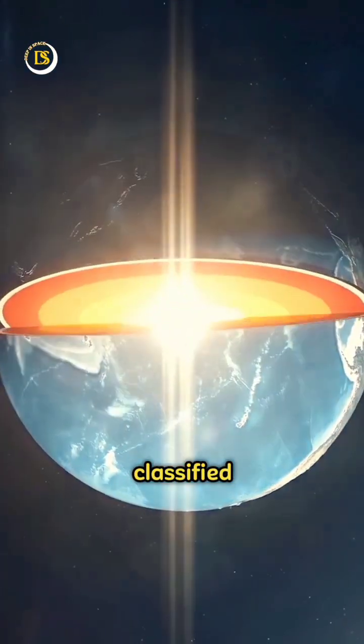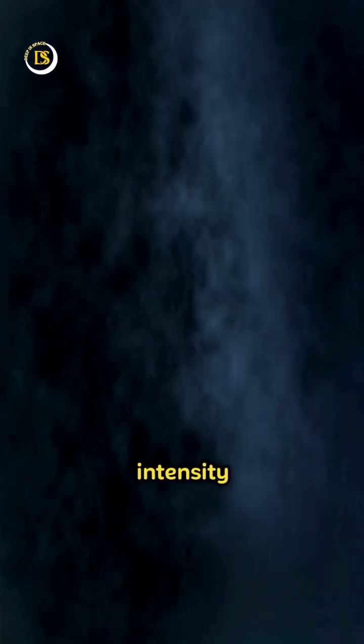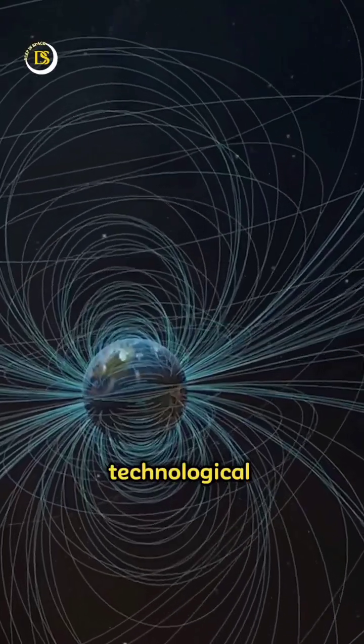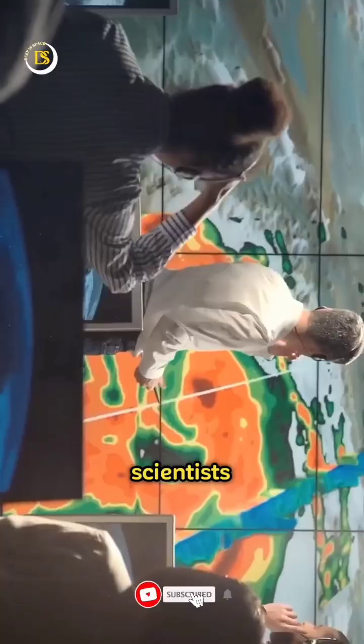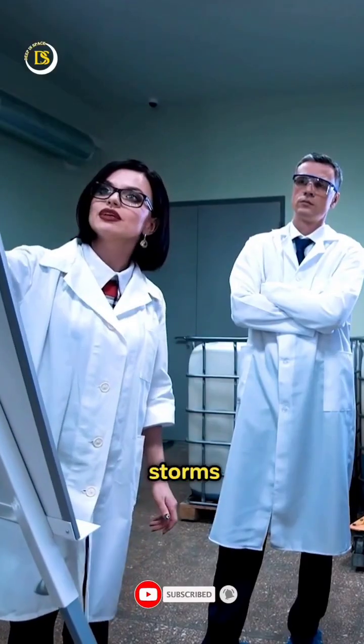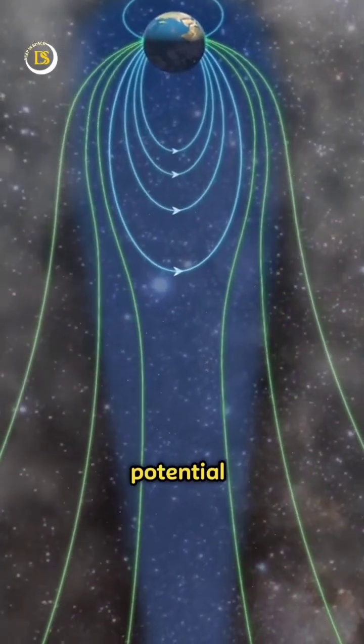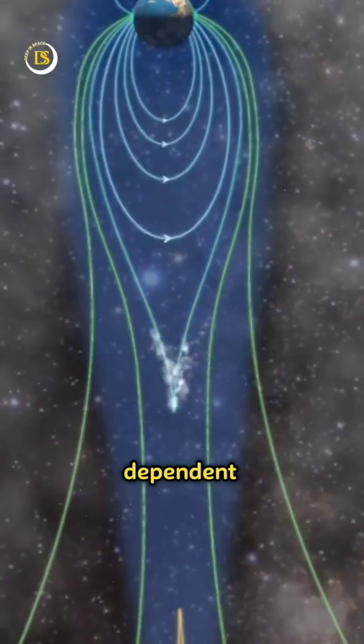Geomagnetic storms are classified into different levels based on their intensity, with severe storms having the potential to impact various technological systems on Earth. Scientists monitor and study these storms to better understand their effects and develop strategies to mitigate any potential risks they pose to our technology-dependent society.